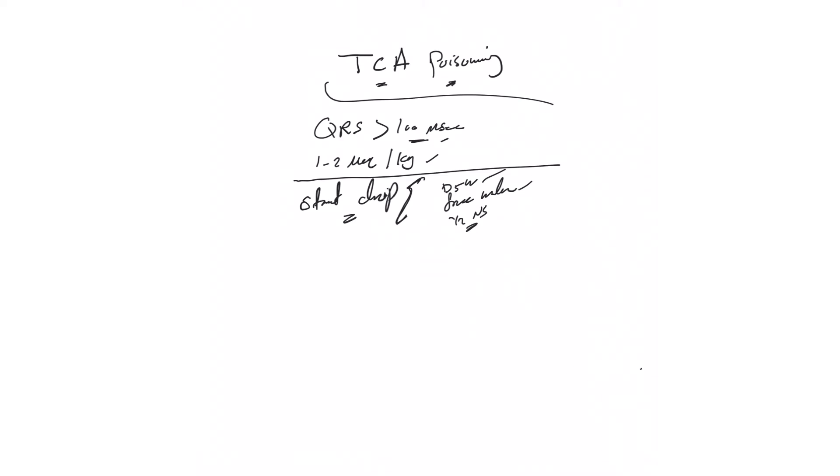Here, the way you give this infusion is usually 250 milliliters per hour with a target pH of 7.5 to 7.55. Yes, you want to make the patient alkalotic - that's okay. You give this with that target.